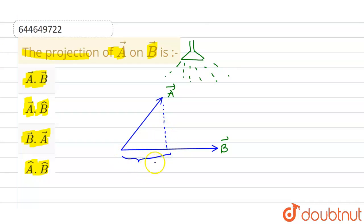So this length is called projection of A vector on B vector, and the expression for the same is denoted by A vector dot with B cap. B cap means direction of B vector. It can also be written as A vector dot B vector divided by magnitude of B vector. And B vector divided by magnitude of B vector is nothing but B cap. So the correct option is option B, which is A vector dot B cap, and rest all options are incorrect.